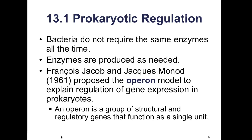In 13.1, prokaryotic regulation: prokaryotes are bacteria and they do not require the same enzymes all the time, so enzymes are going to be produced as they are needed by the bacterial cell. This idea was proposed by two scientists, Jacob and Monod, in 1961. They proposed the operon model, which is used to explain the regulation of gene expression in prokaryotes. An operon itself is a group of structural and regulatory genes that function as a single unit.